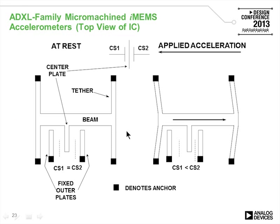MEMS accelerometers use micromachined beams and tethers. As acceleration is applied in either direction, the beam moves proportionally. The capacitance is measured between the beam and fixed outer plates. With no acceleration, the beam is centered and the two capacitors are equal. With acceleration applied, one capacitor increases while the other decreases. By measuring this differential capacitance, the amount of acceleration can be determined.